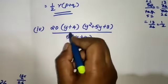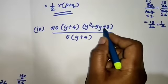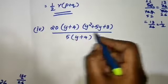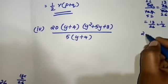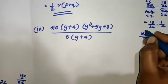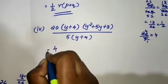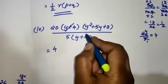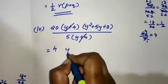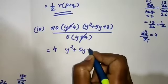Next: 20 into y plus 4 into y squared plus 5y plus 3, divided by 5 into y plus 4. 20 by 5 — 5 will go 1 time, 20 will give 4 times, that is 4. Y plus 4 and y plus 4 can be cancelled. So the answer is 4 into y squared plus 5y plus 3.